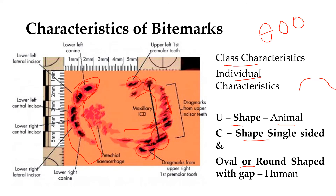The lower left canine, lower lateral incisor, and the sequence of teeth placement can be analyzed. There is a quite large difference between the gap of the canine and the lateral incisor, while both central incisors are side by side. This represents the individual characteristic of a person used to identify whether he is the particular suspect. Petechial hemorrhages can also be seen inside the bite mark in the middle part.